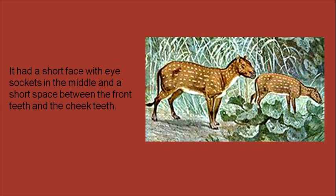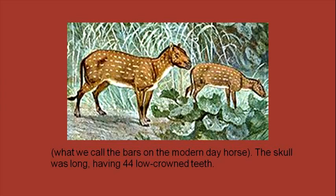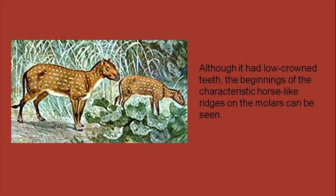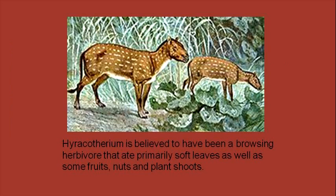It had a short face with eye sockets in the middle, and a short space between the front teeth and the cheek teeth — what we call the bars on modern-day horses. The skull was long, having 44 low-crowned teeth. Although it had low-crowned teeth, the beginnings of the characteristic horse-like ridges on the molars can be seen. Hyracotherium is believed to have been a browsing herbivore that ate mostly soft leaves, as well as some fruits, nuts, and plant shoots.